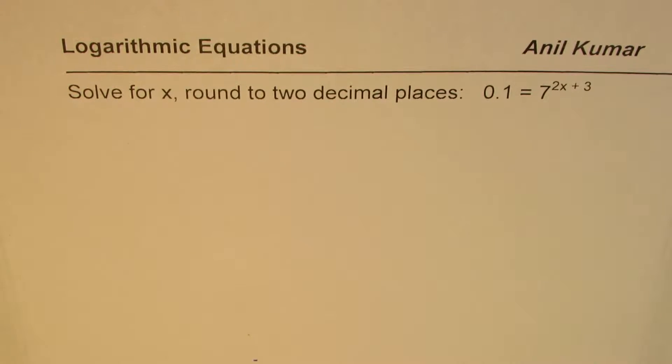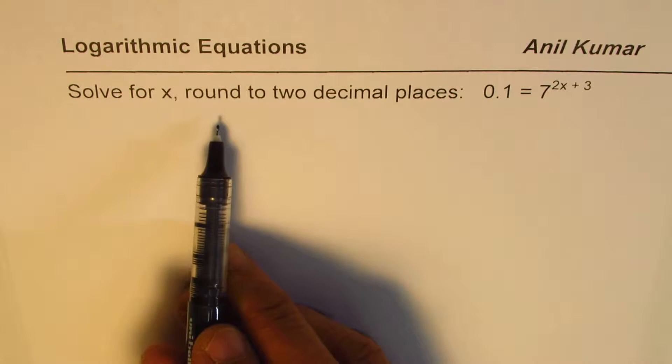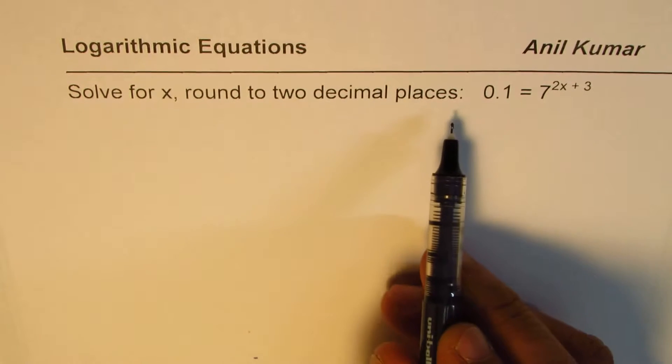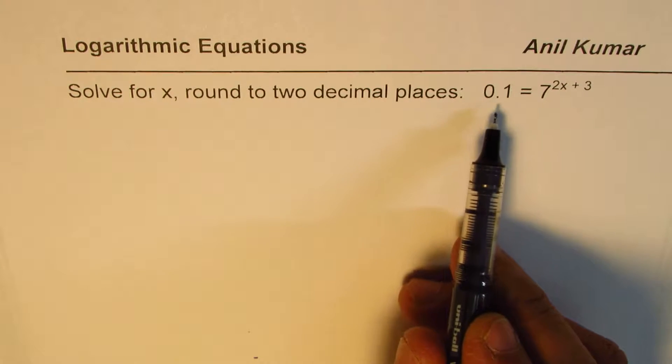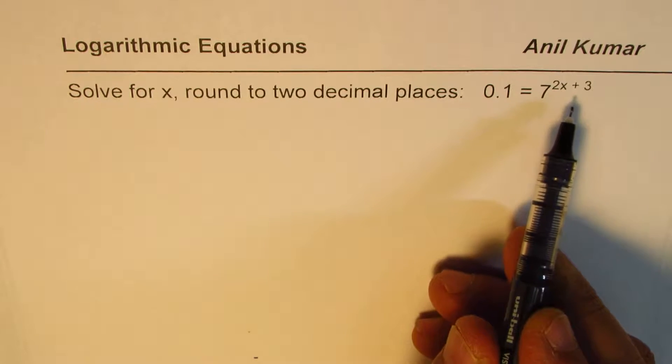I'm Anil Kumar, sharing with you some interesting questions on logarithmic equations. We need to solve for x, round the answer to two decimal places for the equation 0.1 = 7^(2x+3).